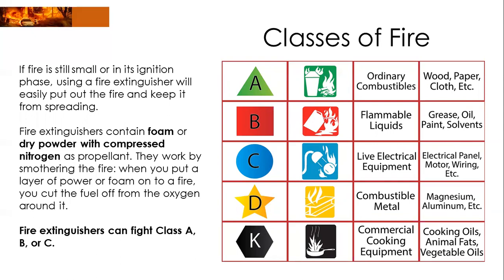Classes of fire are classified according to their fuel. We have Class A — ordinary combustibles: wood, paper, cloth. Class B — flammable liquids: grease, oil, paint, solvents. Class C — live electrical equipment such as electrical panels, motors, wiring, etc. Class D — combustible metals such as magnesium and aluminum. And lastly Class K — commercial cooking equipment, cooking oils, animal fats, vegetable oils. Common fire extinguishers can only put out fires under Class A, B, and C. If it is already Class D or K, you should look for a special type of fire extinguisher.